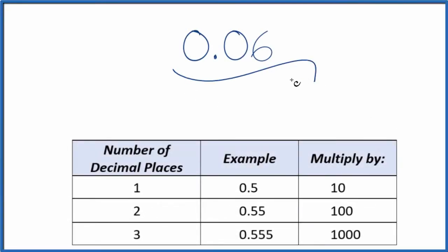Let's write the decimal 0.06 as a fraction. To do that, the first thing we can do is put 0.06 over 1. It's still equal to 0.06, but we have the start of a fraction now.